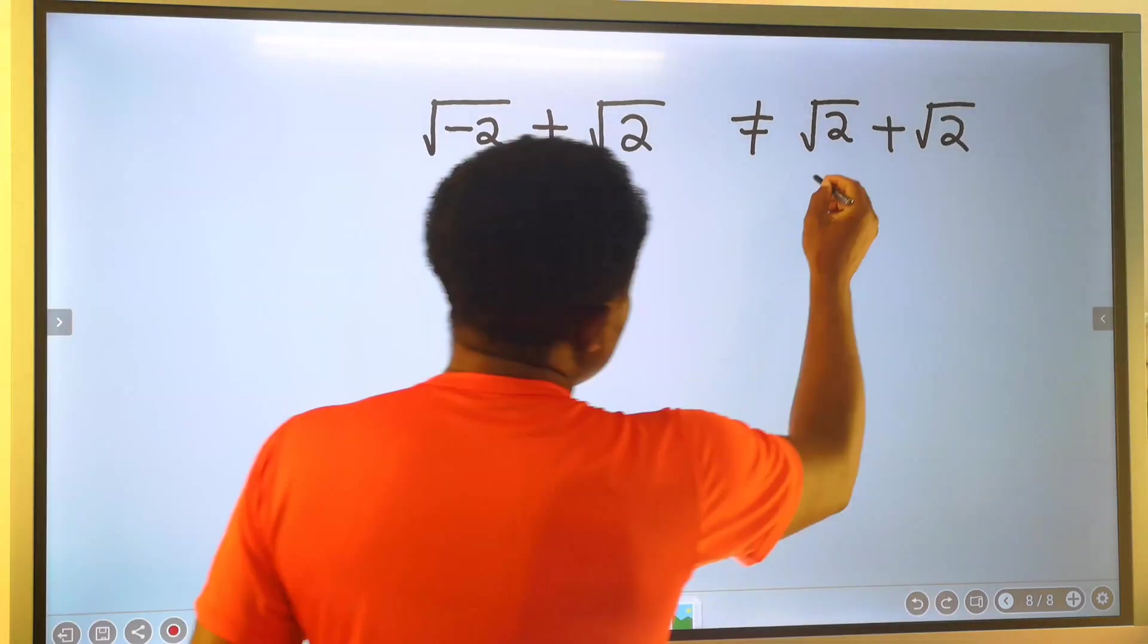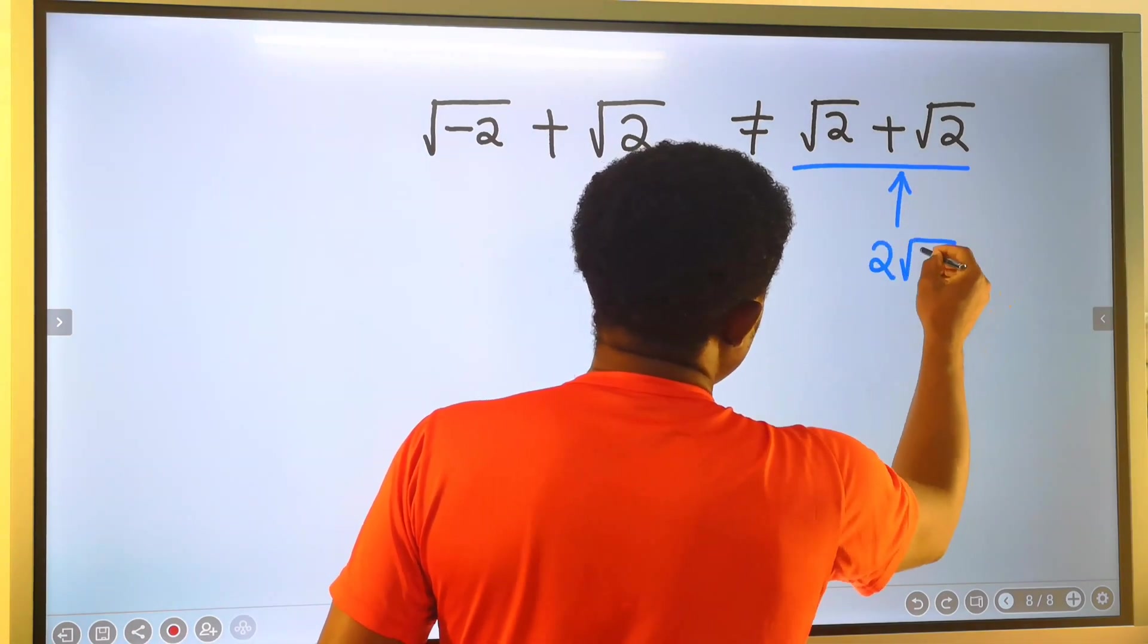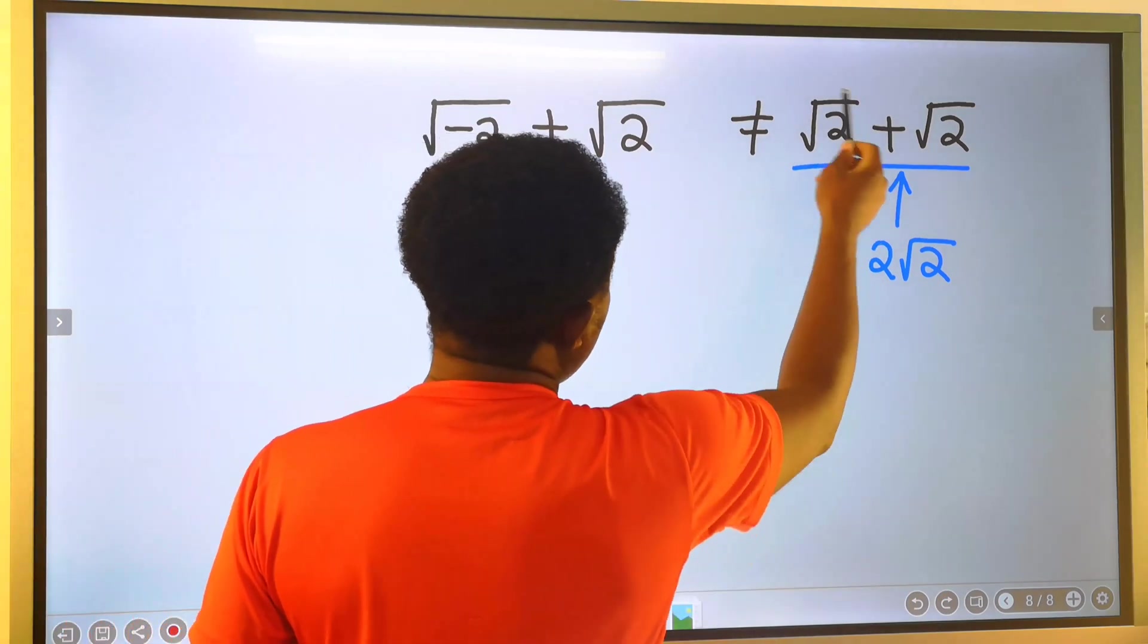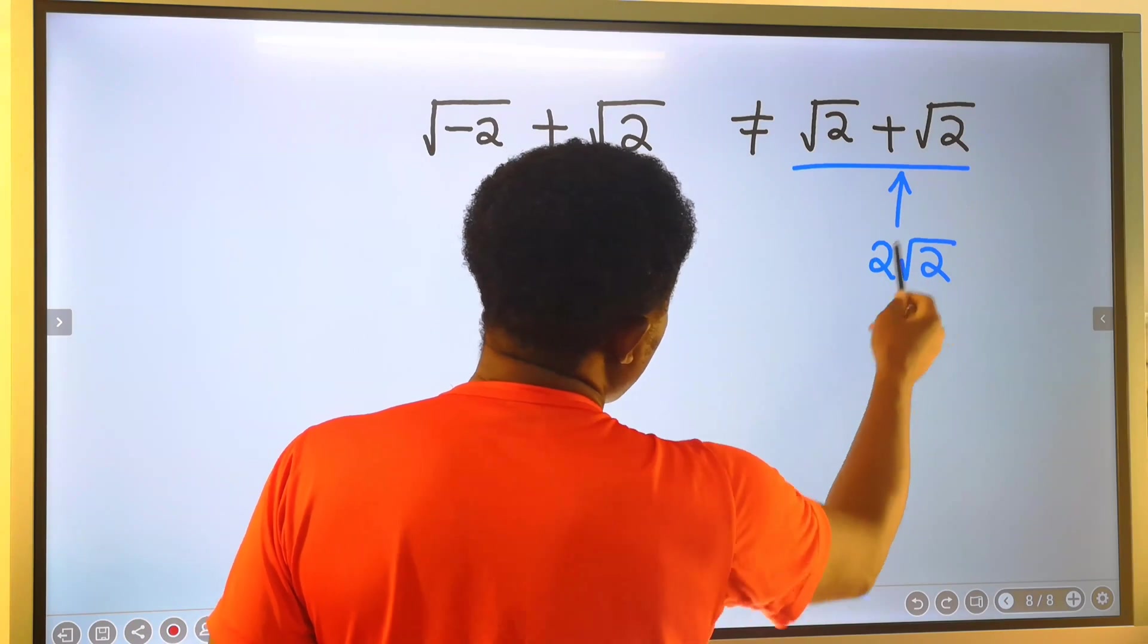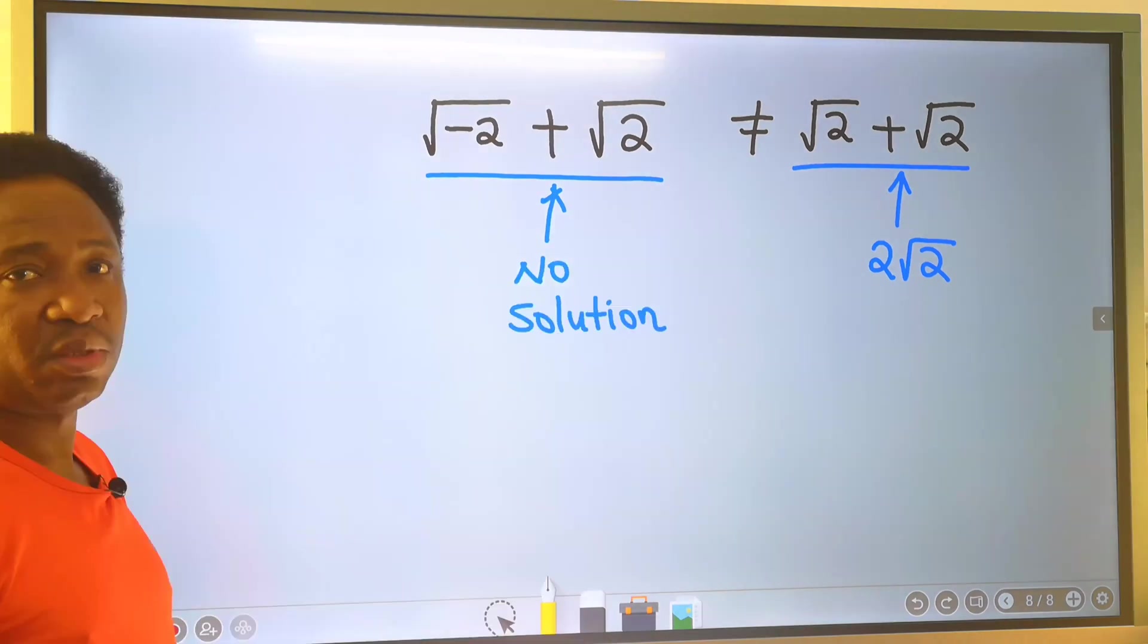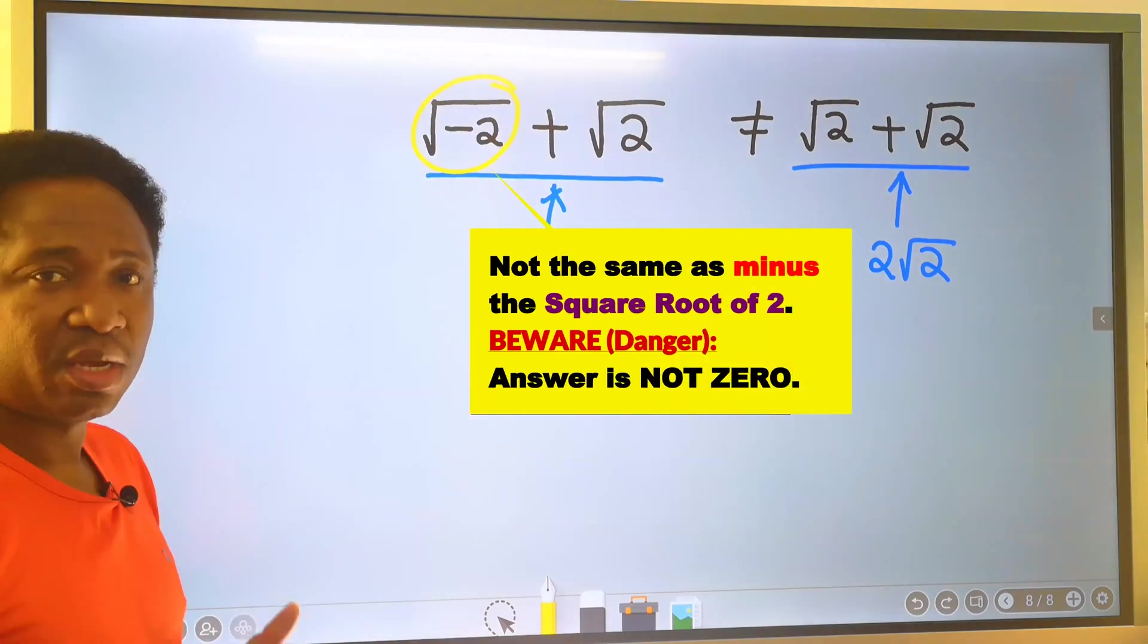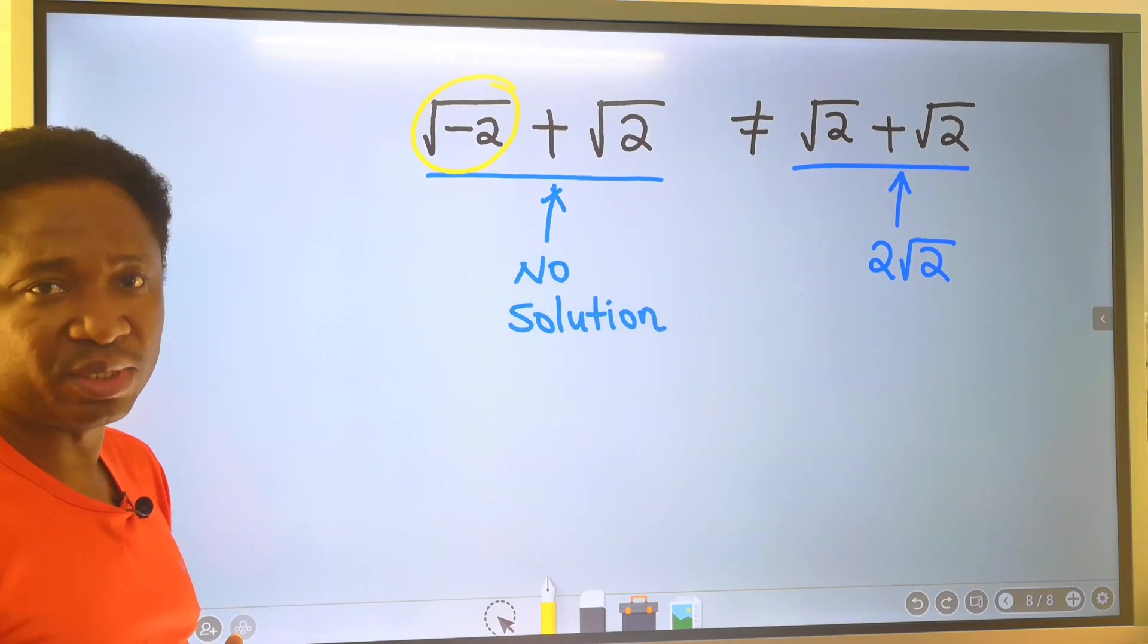This will give you two root two, because this is like one apple plus another apple will give you two apples. But this has no solution because of the presence of the minus. Remember, at this stage we do not consider complex numbers.